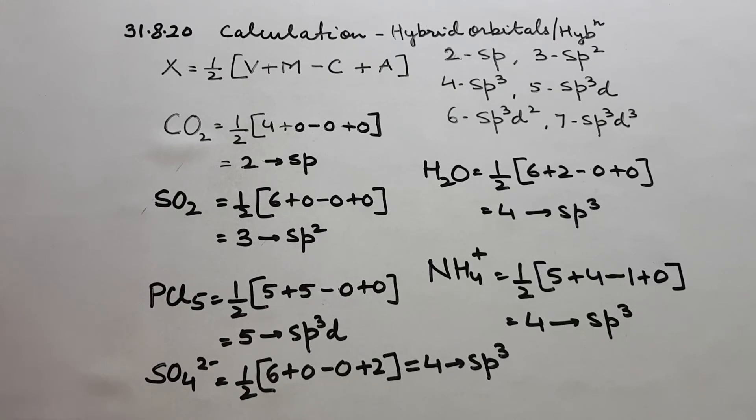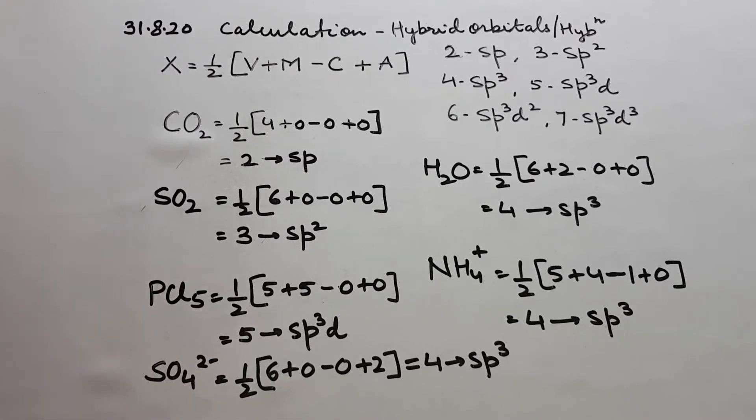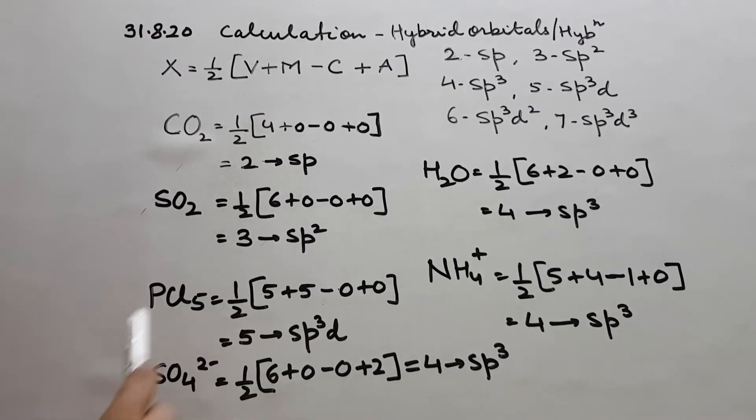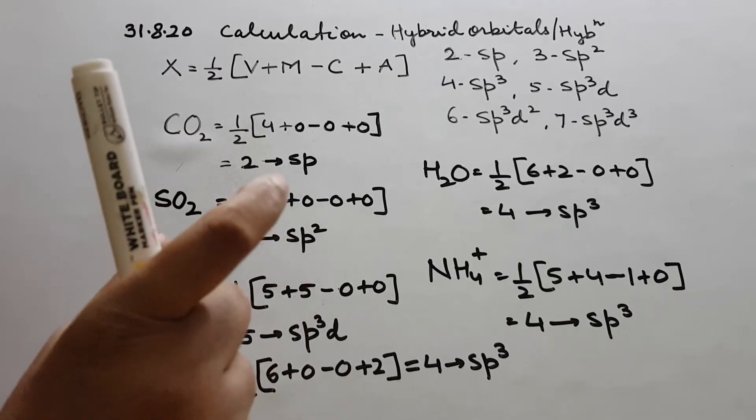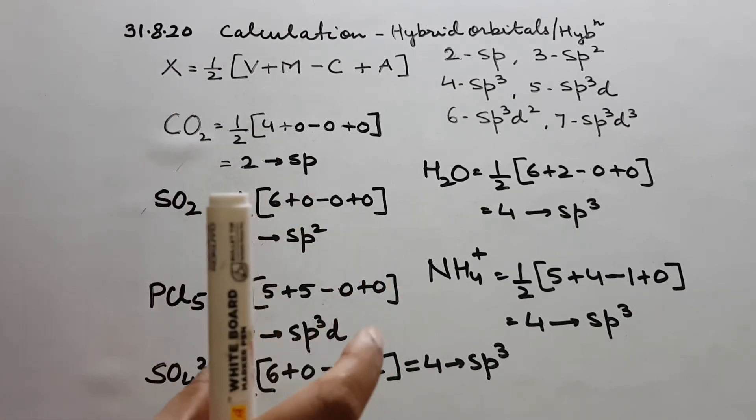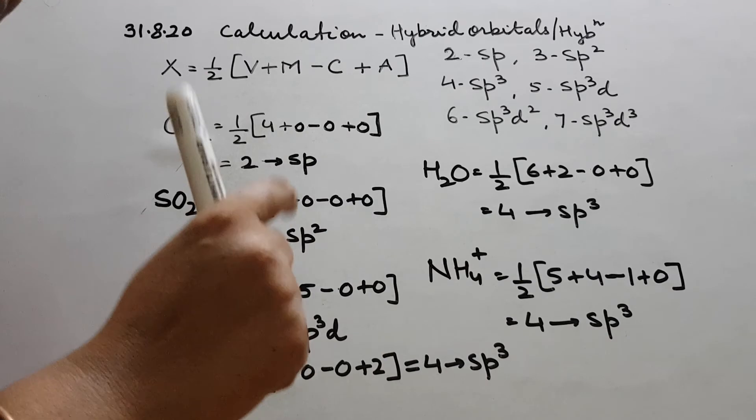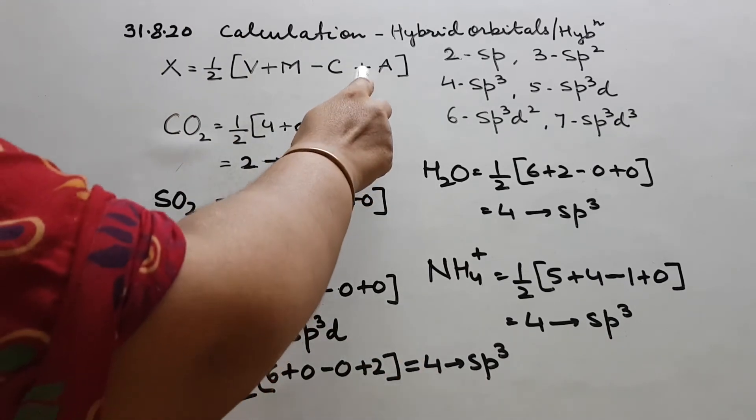Come to SO4 2 minus. Central atom is S, so half. And here it is 6. Neighboring atoms are O, they are not monovalent atoms, so here it is 0. Then cationic charge here is 0. Anionic charge is 2 minus. I was telling you, we just see the numerical value, the digit, the number, not plus and minus.